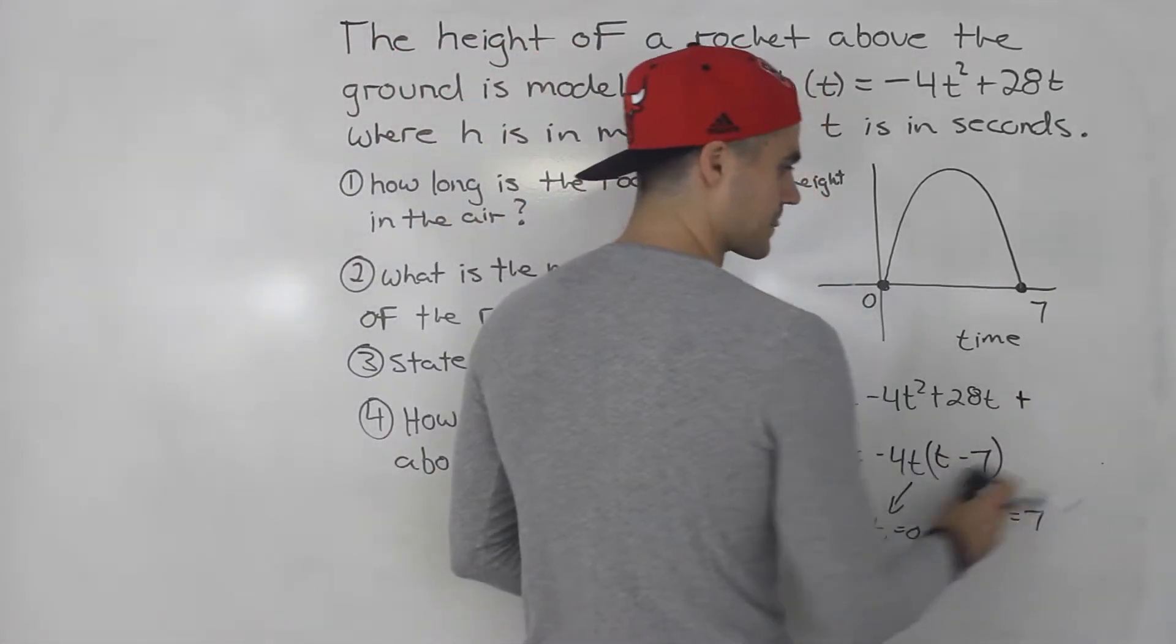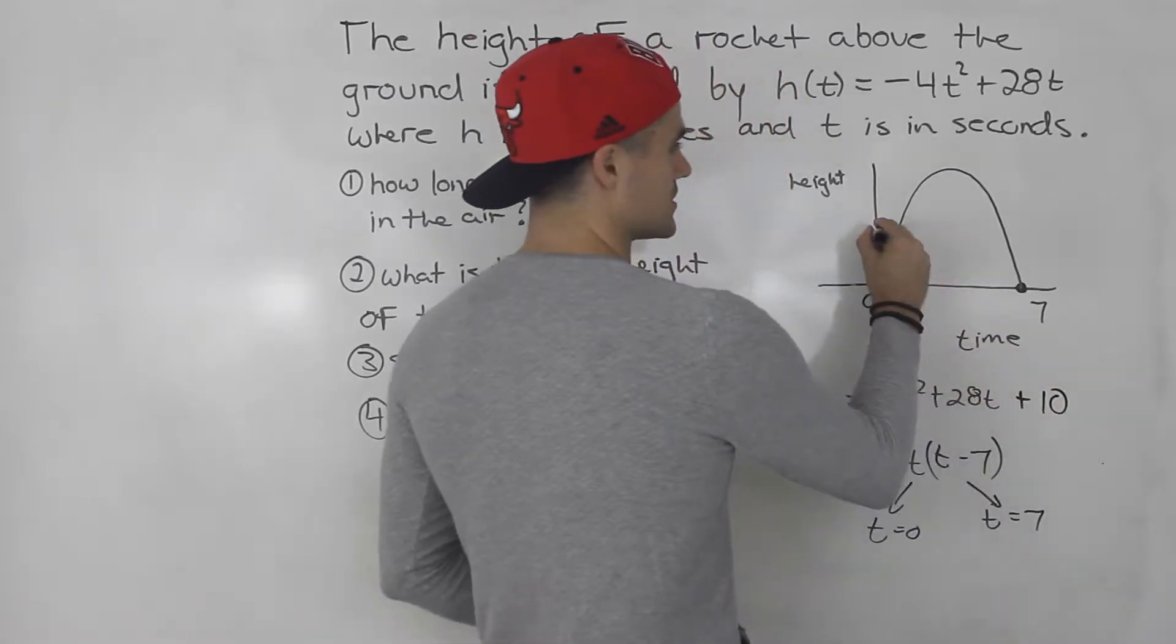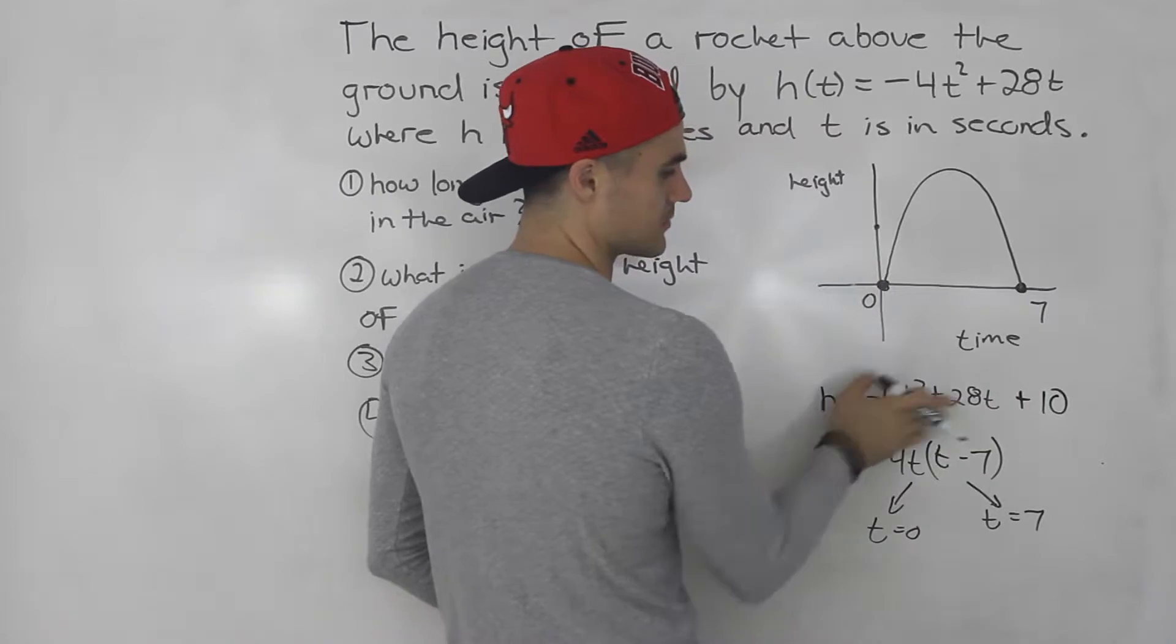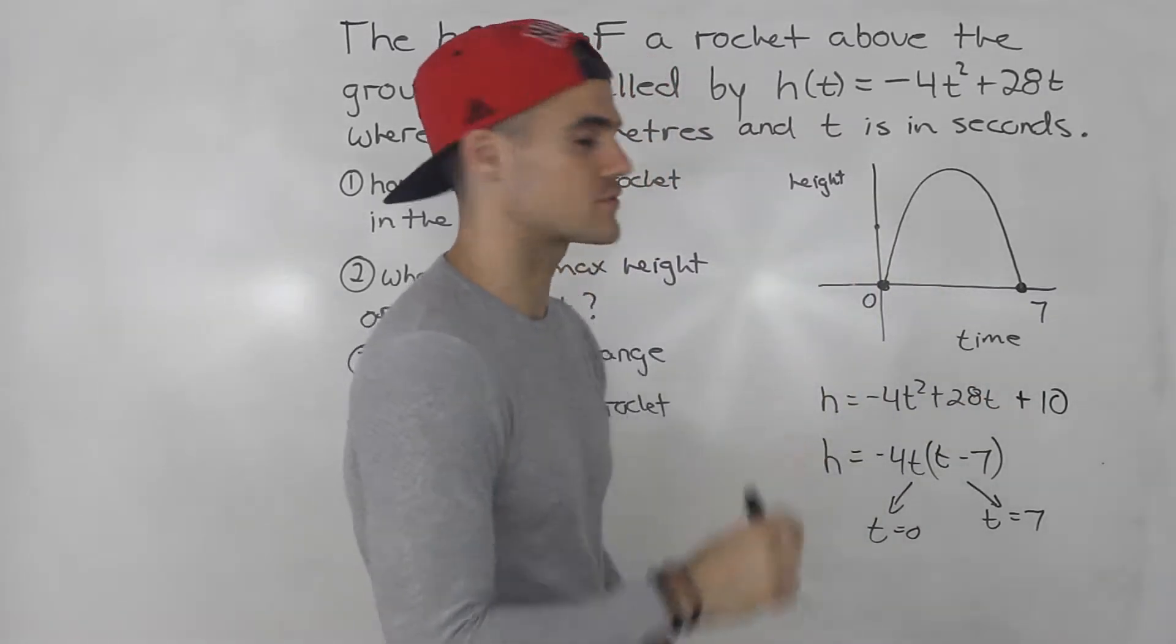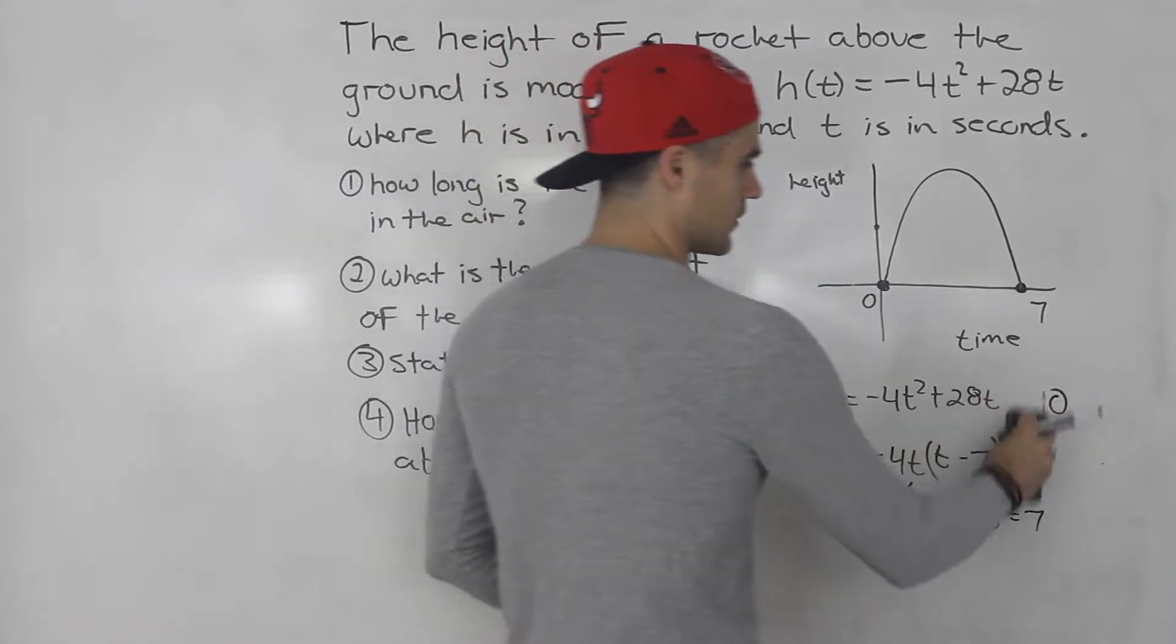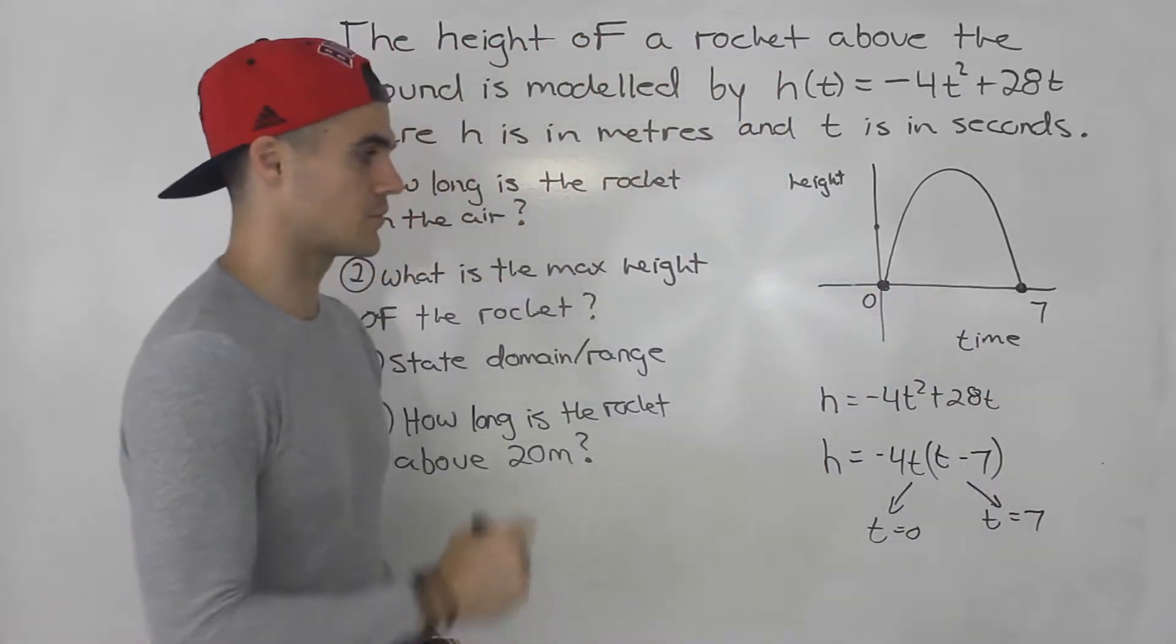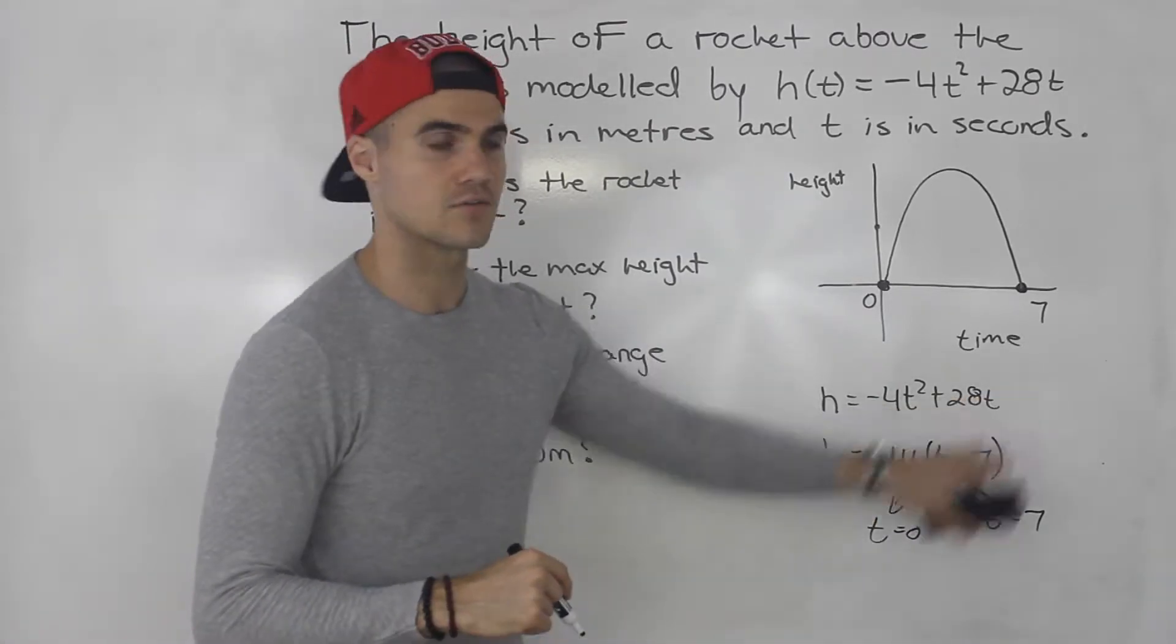If there is a c value, so let's say there was like 10, then it would be starting up here at 10. The y intercept or the h intercept in this case would be 10. So it's usually like a ball thrown off a roof or something like that. But whenever the c value is 0, one of the intercepts for the quadratic is always 0 because you could factor out a t. There's no c value there.